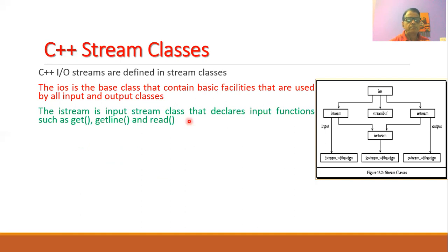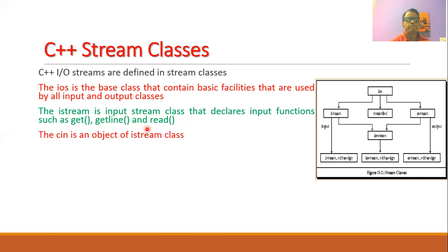The istream, or input stream class, declares the input functions such as get, getline, and read. These functions are defined in the input stream class. One can also observe that the object cin is an object of the istream class.